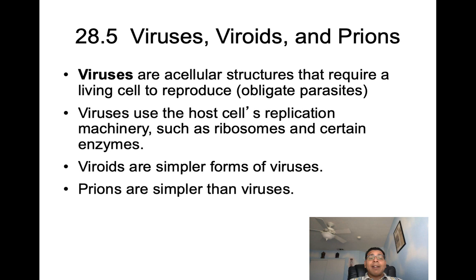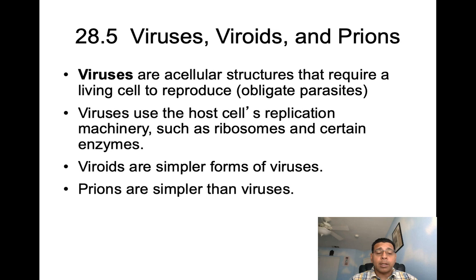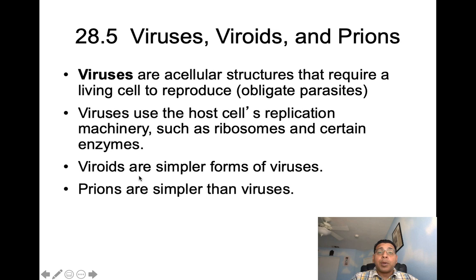Next, let's talk about viruses, viroids, and prions. Viruses are not composed of cells — they are acellular structures and obligate parasites, meaning they reproduce only inside a living host cell by utilizing at least some of the cell's machinery such as ribosomes or enzymes. Viroids are simpler forms of viruses, and prions are simpler than viruses as well.